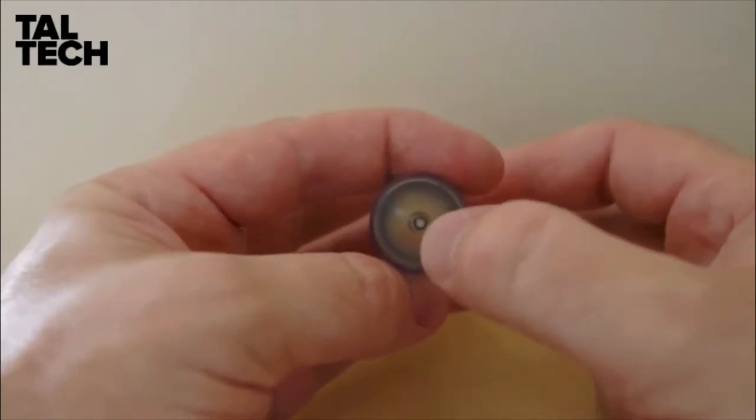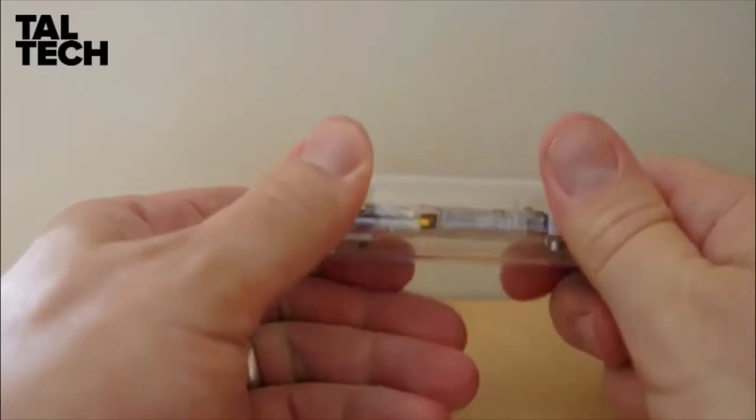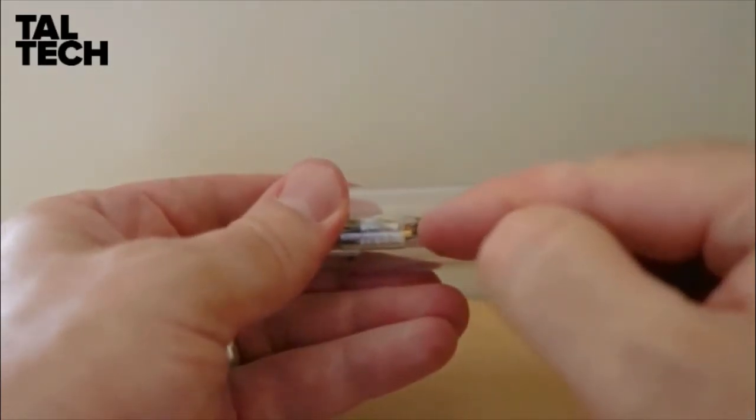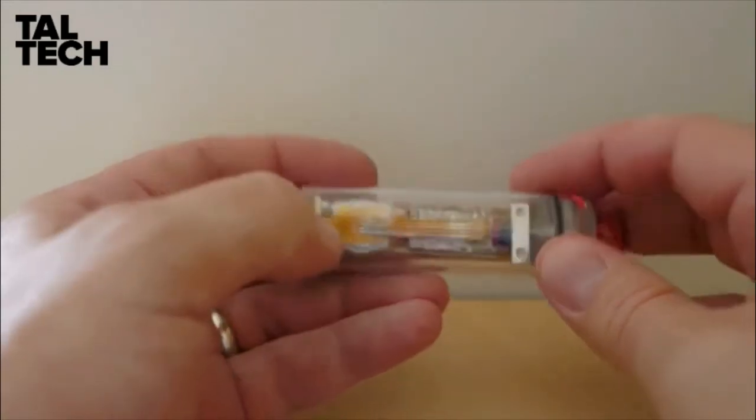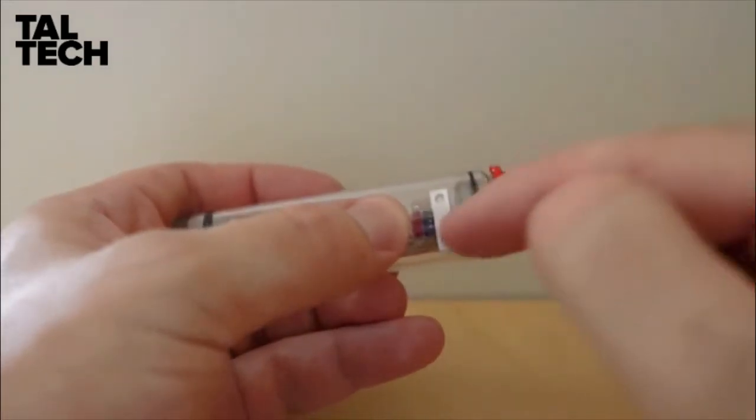This is where the temperature compensated pressure sensor is. Right at the center of mass in the middle of the sensor, we have the high G plus/minus 400 G accelerometer. To turn the sensor on and off, we have this red bar here that's the magnetic switch.